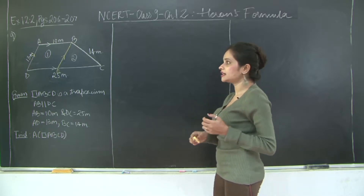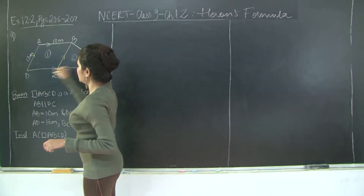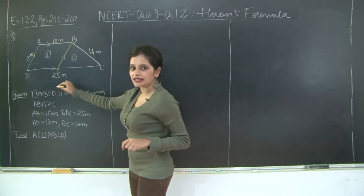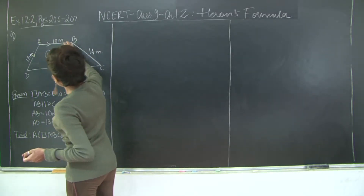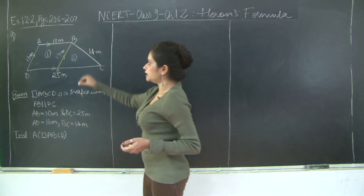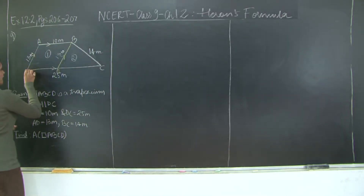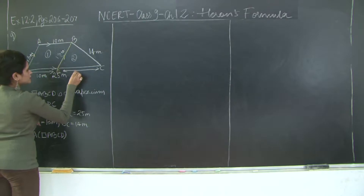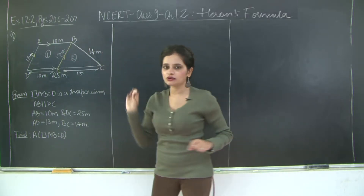To find the area of these two regions we need the dimensions. Since ABED is a parallelogram, opposite sides are equal and parallel. Therefore AD is equal to BE, so BE equals 13 meters. Also AB is equal to DE, so DE equals 10 meters. Since the entire length DC is 25, EC will be 25 minus 10, which is 15 meters. Now we have all the dimensions to find the area of triangle BEC using Heron's formula.